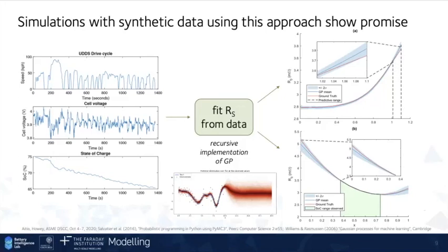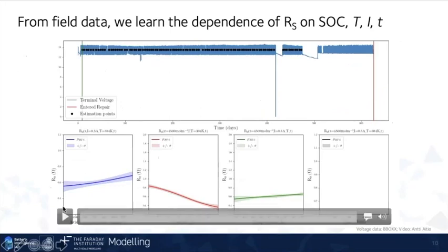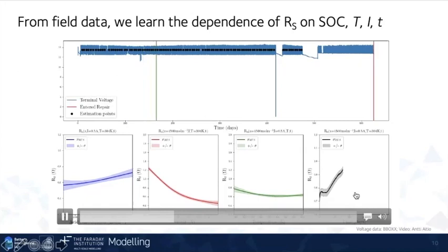Okay, so the technique seems to work well in simulation. But what about on real data? So here's some real data. So this is about a year and a half's worth of lead acid battery voltage data at the top. And what this video shows is how we can actually learn the shape of the resistance as a function of first the acid concentration, then the current, then the temperature, and then time.